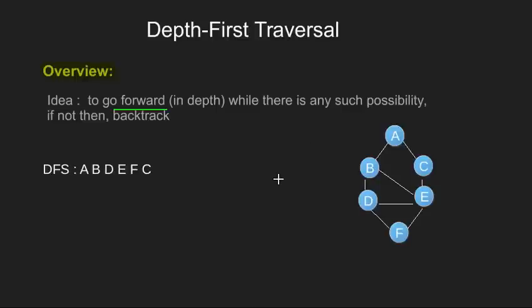Let's assume this is the graph and we have to do depth first traversal in this. One of the way for this can be to start from this vertex A, go to its unvisited neighbour B, then D, then E, F and finally C.